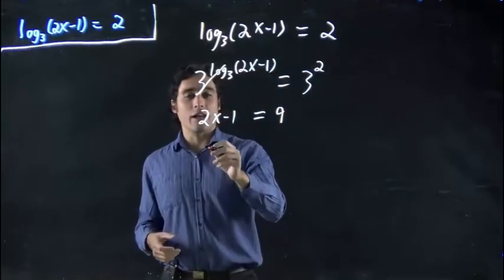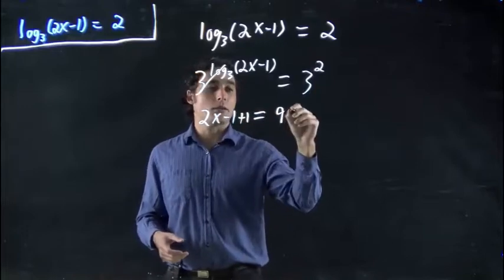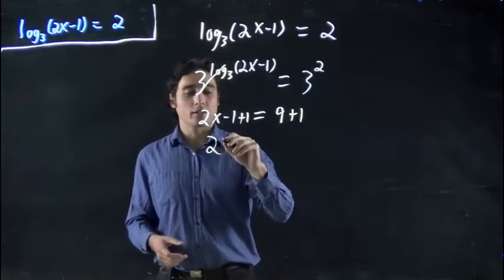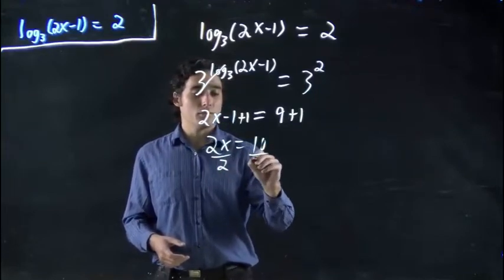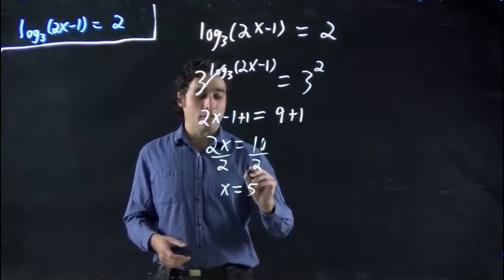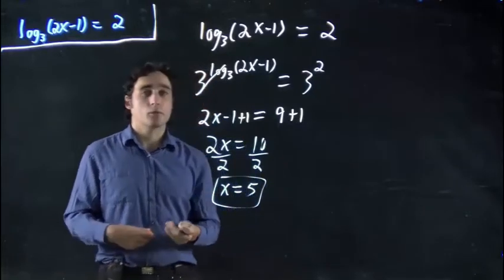So what do I do? Well I'm gonna add plus 1 to both sides. 2x equals 10. Divide both sides by 2 and I'm gonna get x equals 5 as my final answer. So we're all done.